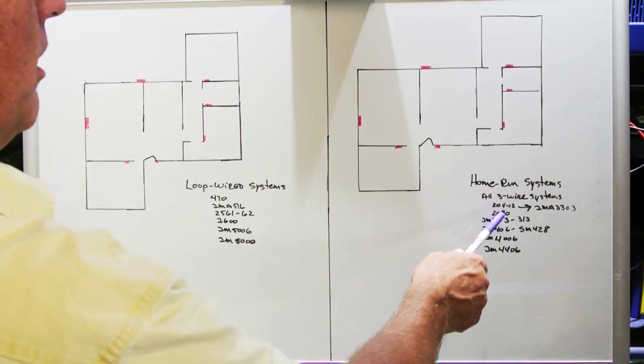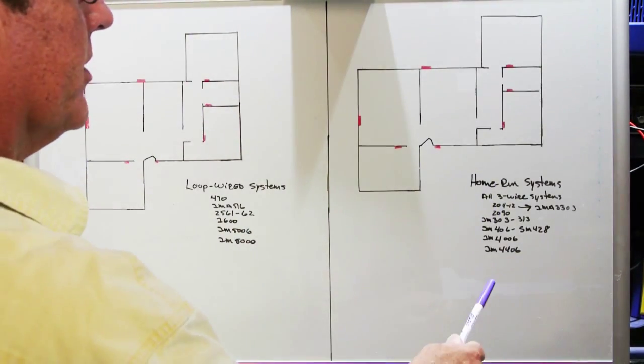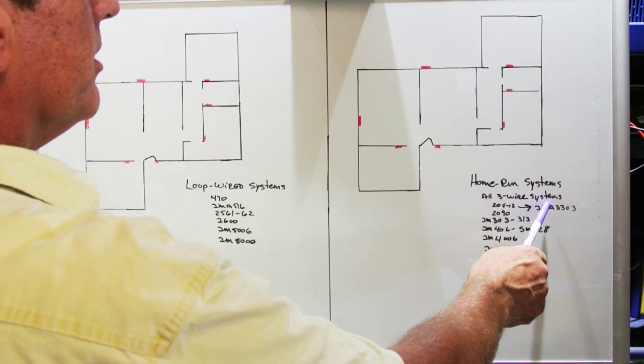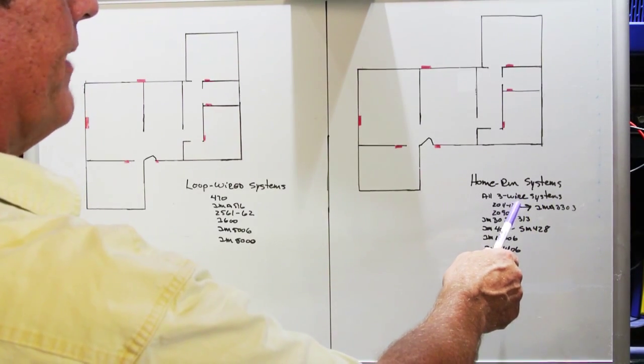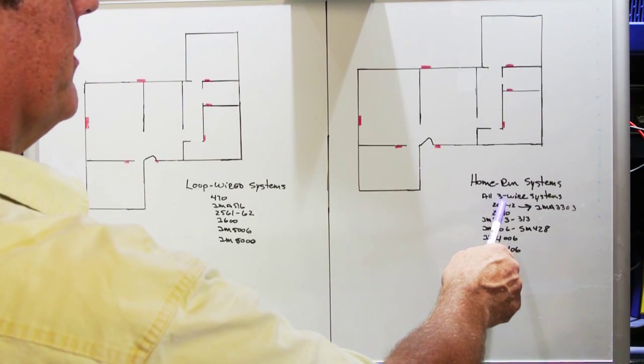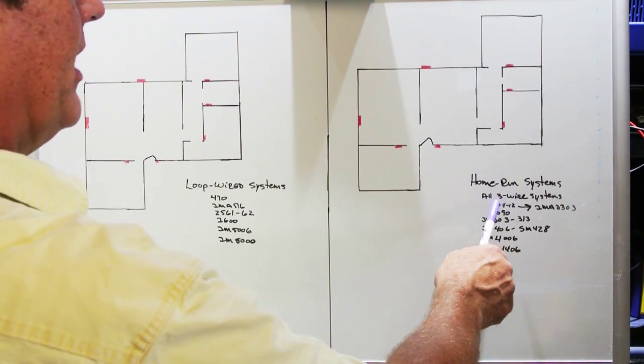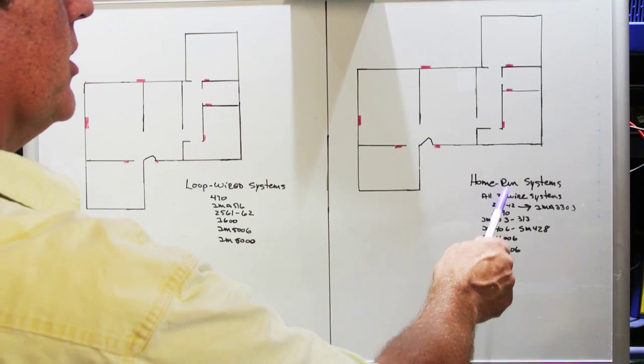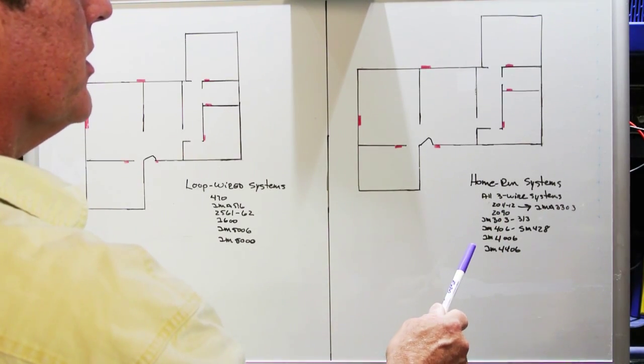Home run systems are for the most part everything else. All three wire systems are home run. Those include the early vacuum tube based models like 2011, 2012, 2057, 2058. Anything that the model number starts with 2-0 is a three wire home run system.